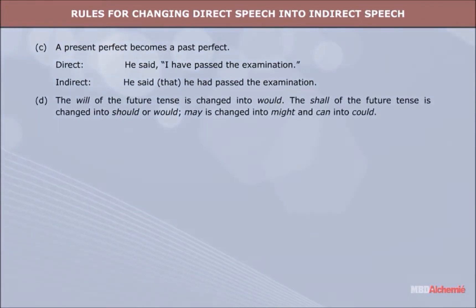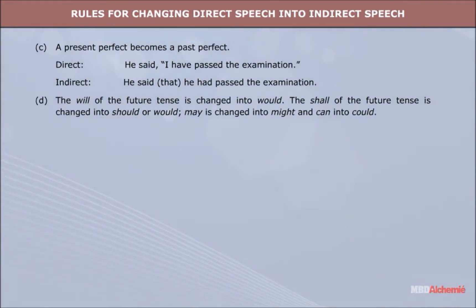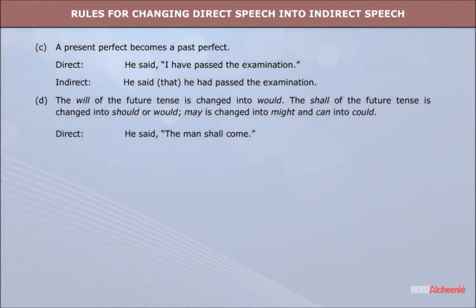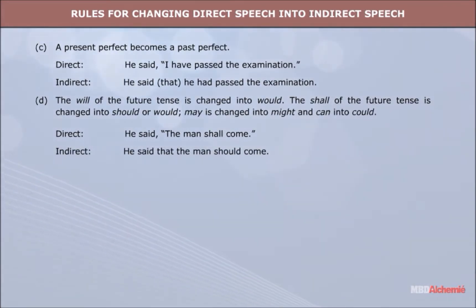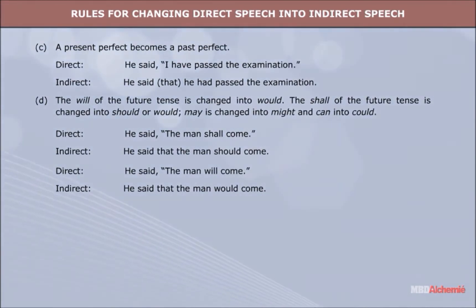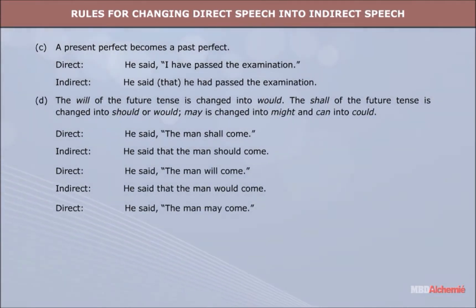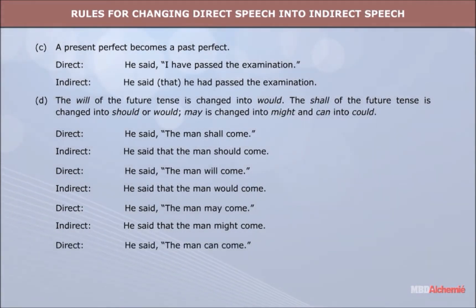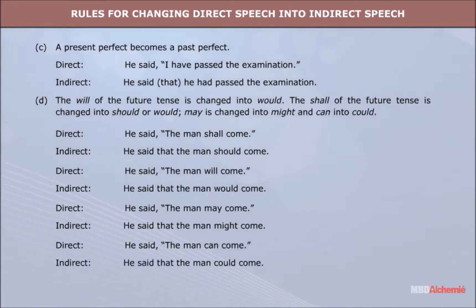D. The 'will' of the future tense is changed into 'would.' The 'shall' of the future tense is changed into 'should' or 'would.' 'May' is changed into 'might' and 'can' into 'could.' Direct: 'The man shall come.' Indirect: 'The man should come.' Direct: 'The man will come.' Indirect: 'The man would come.' Direct: 'The man may come.' Indirect: 'The man might come.' Direct: 'The man can come.' Indirect: 'The man could come.'